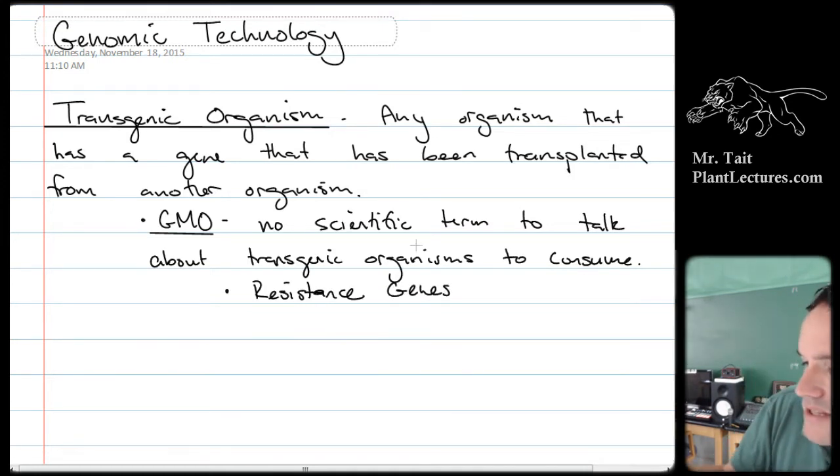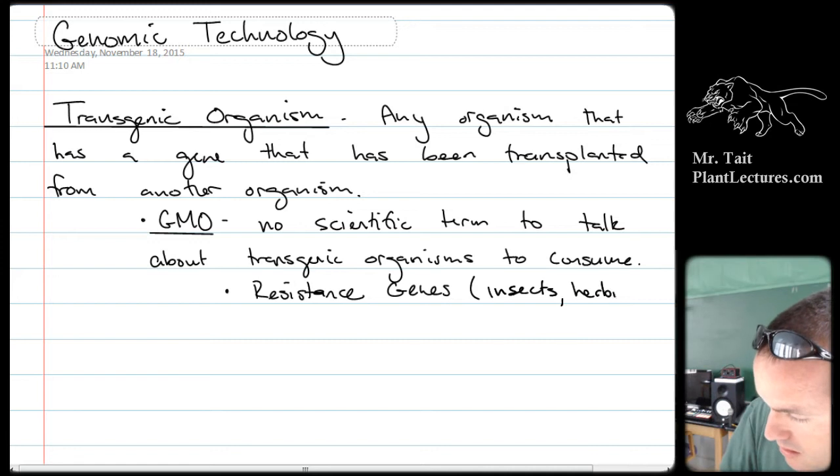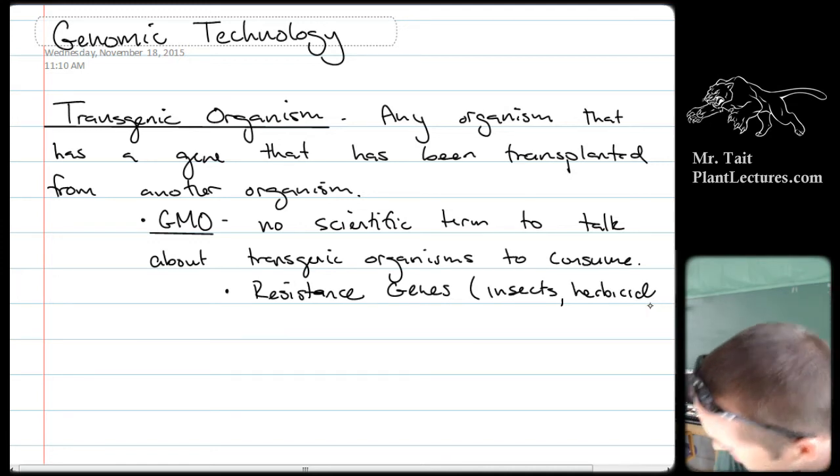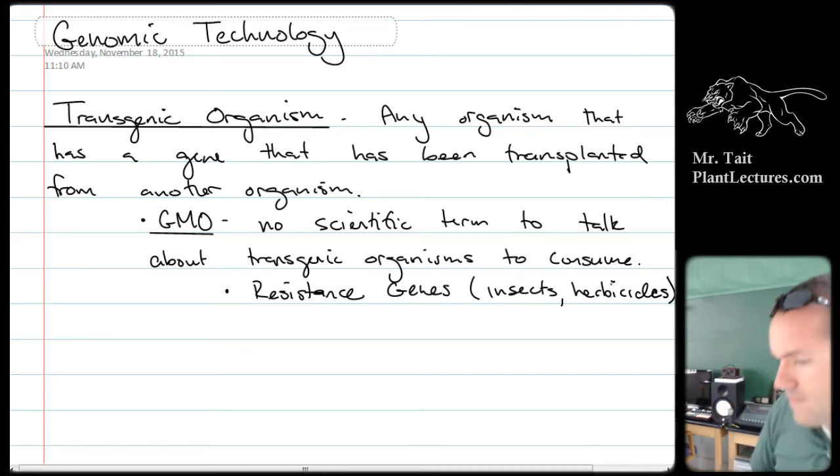These genes for resistance would resist things like insects and herbicides. We might want to be resistant to some kind of beetle that normally eats that plant. If they produce a chemical that stops that beetle from eating them, that would be good. For herbicides, we want to be able to spray them on our crops to kill all the other plants around without killing the crop plant.